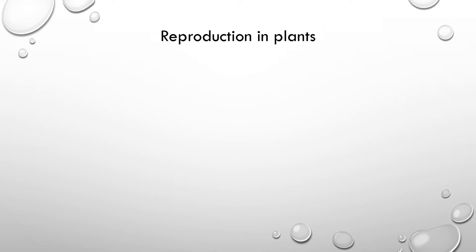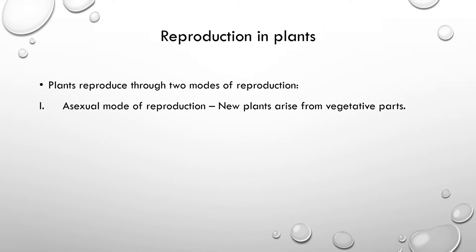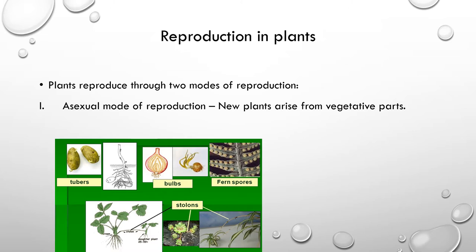Now let's see how plants perform reproduction. Plants show both main types of reproduction. The first type is asexual reproduction, where all the vegetative parts of the plant — that means all parts except the seeds — can produce new plants. This diagram shows some examples of vegetative parts found in plants, and these parts can produce new plants through the process of asexual reproduction.